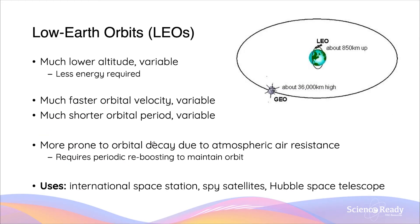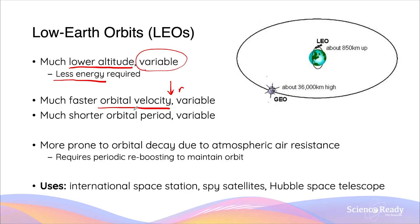In contrast, low Earth orbits, otherwise known as LEOs, have a much lower altitude, and that altitude can be quite variable — usually around a few hundred kilometres up to 2,000 kilometres. Due to the lower altitude, less energy is required to launch satellites to these low Earth orbits, so we can do them more efficiently, faster, and at a lower energy expenditure. Due to the lower orbital radius, LEO satellites have a much faster orbital velocity, and due to the faster velocity, they have a much shorter orbital period.